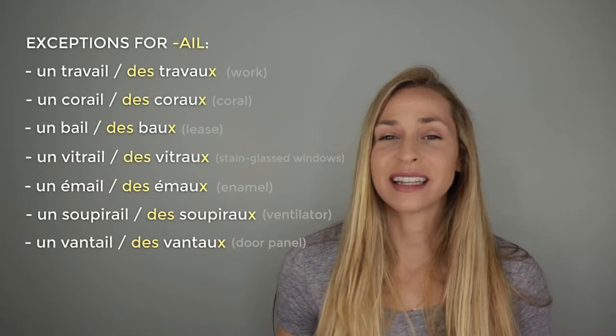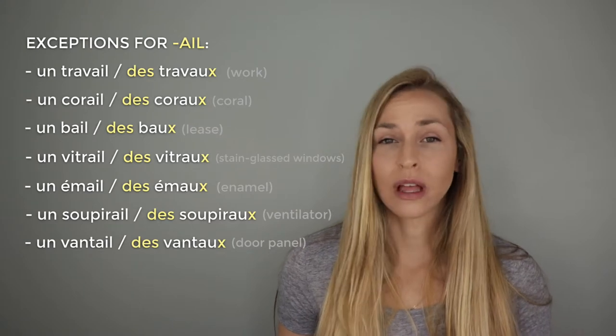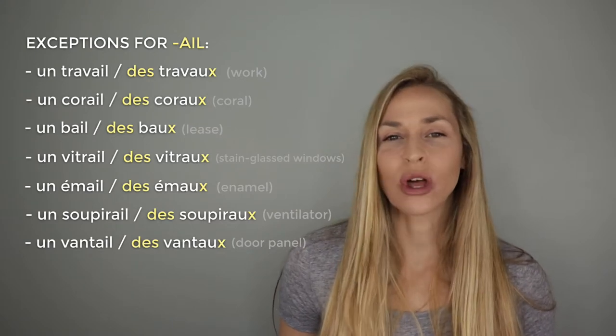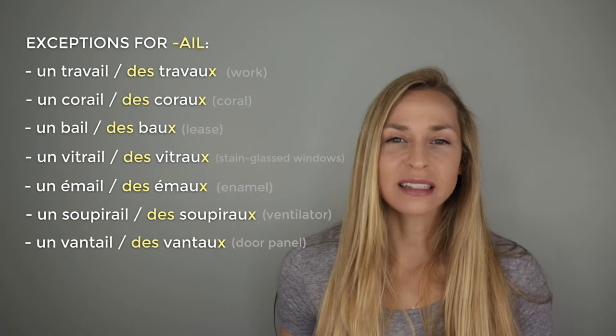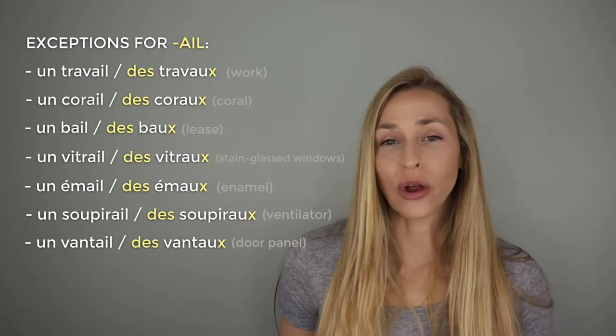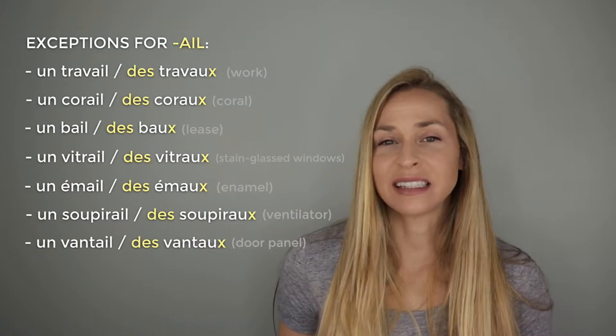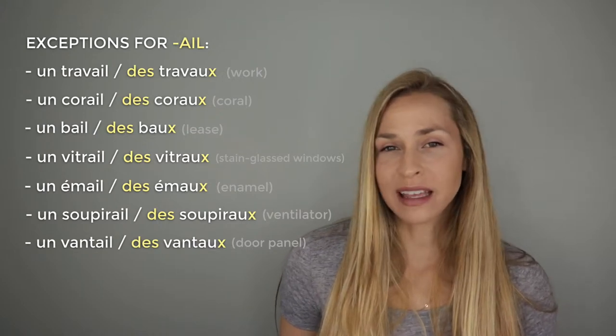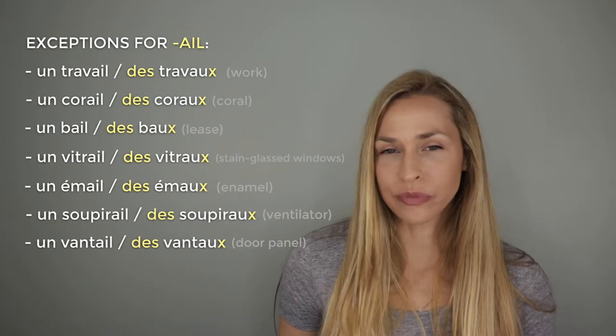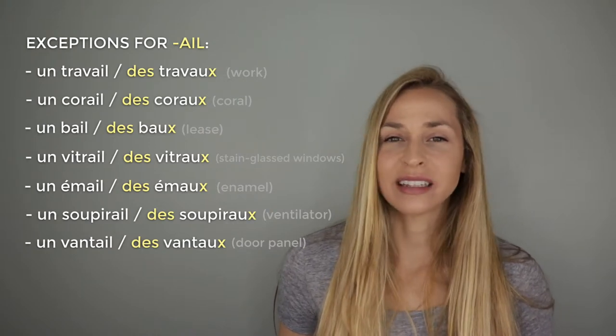These exceptions, instead of adding an S, drop the I completely and replace it with AUX (A-U-X). Let's go over those exceptions: un travail, des travaux. Un corail, des coraux. Un bail, des baux. Un vitrail, des vitraux. Un émail, des émaux. Un soupirail, des soupiraux. Et un ventail, des venteaux.